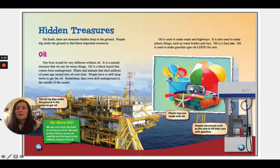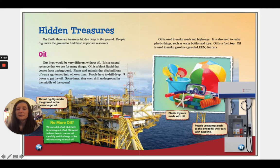There are treasures hidden deep in the ground — people dig underground to find these important resources. Oil is one of them. Our lives would be very different without oil; it is a natural resource that we use for many things. Oil is a black liquid that comes from underground plants and animals that died thousands of years ago and turned into oil over time. People have to drill deep down to get the oil — sometimes they even drill underground in the middle of the ocean. Oil is used to make roads and highways, plastic things such as water bottles and toys, and gasoline for cars.